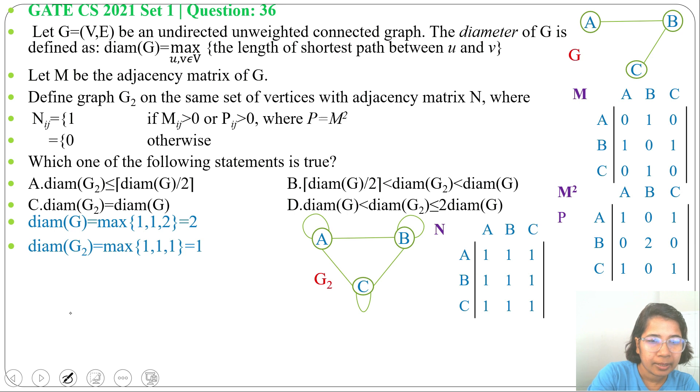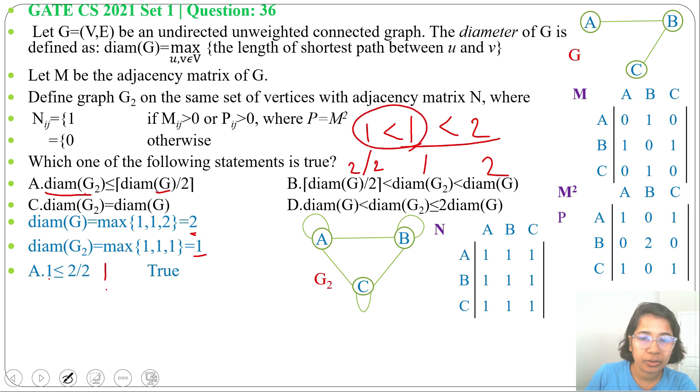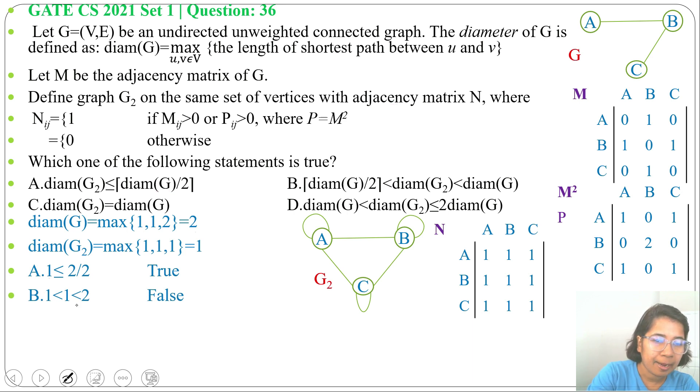Let's check all options. Option A: diameter of G2 less than equals to diameter of G divide 2. Diameter of G2 is 1, diameter of G is 2. 2 divide 2 will be 1. So 1 equals to 1, that's why it's true. Next option B: diameter of G divide 2, diameter of G is 2, 2 divide 2 less than diameter of G2. So 1 less than 1 less than 2. This is true but this first part 1 is not less than 1. So due to this option B is false. Next option C, diameter of G2 equals to diameter of G. Obviously they are not same, so that's why it's false.